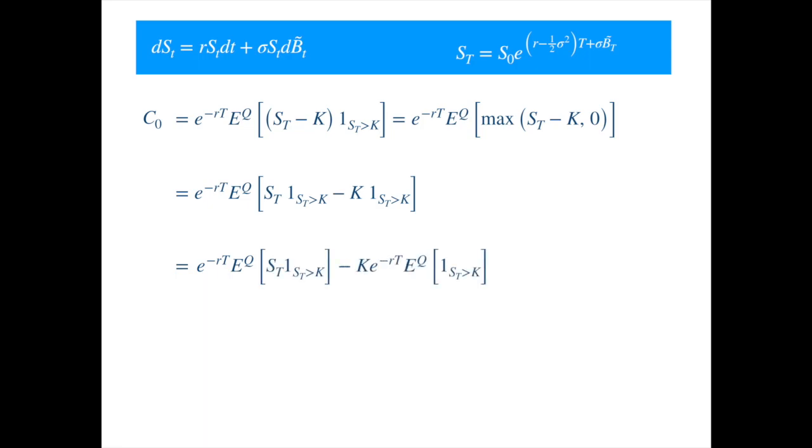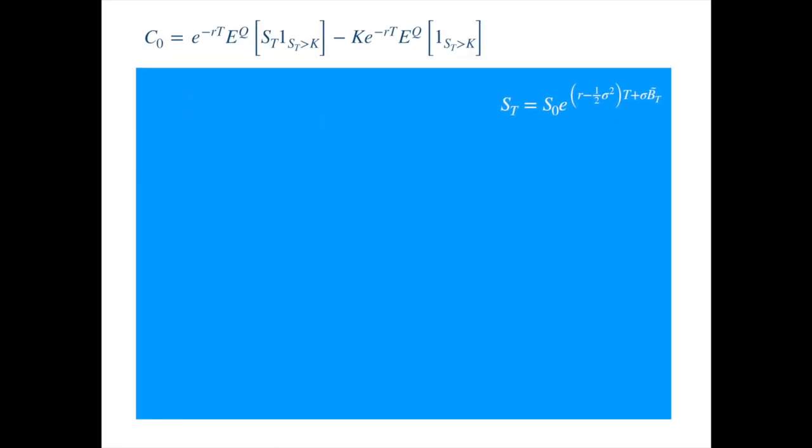Now, let's evaluate these expressions. The second expression is more straightforward, so let's tackle it first as a warm-up. The mindset here is that the expected value of the indicator function is the same thing as the probability of the indicated event.